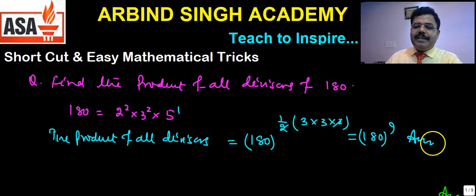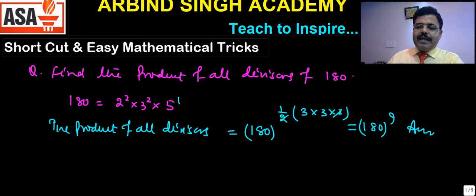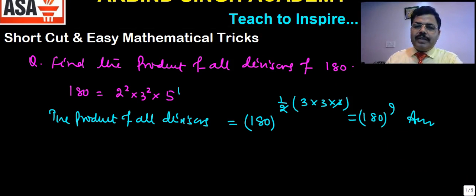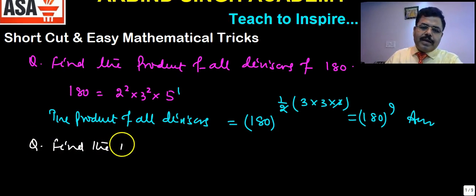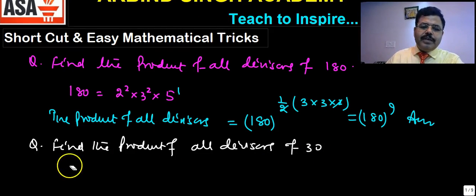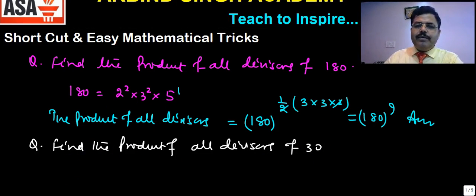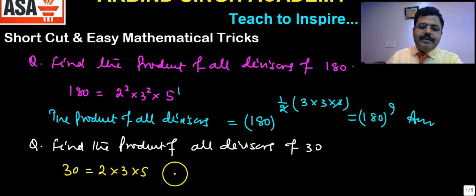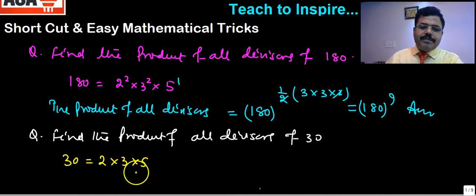You can check it for a smaller number. Let me write another example. Question is find the product of all divisors of 30. So 30 can be written as 2 into 3 into 5. So 30 can be written as 2 into 3 into 5, right?